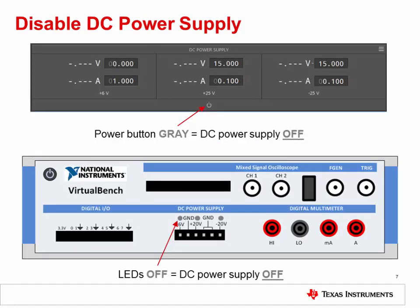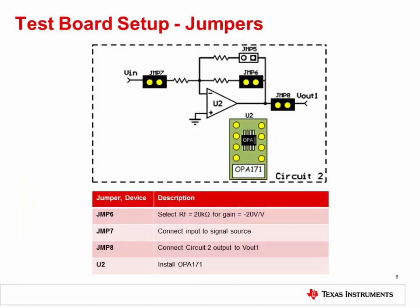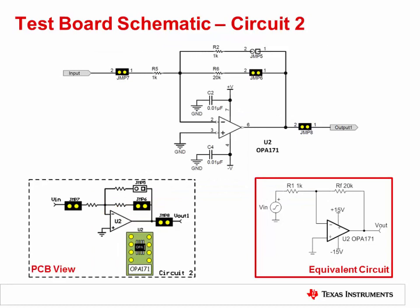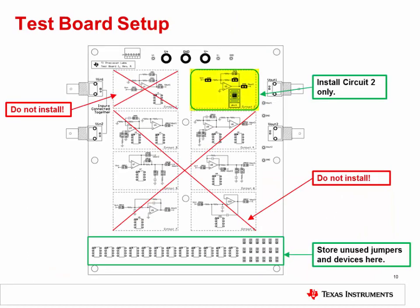Make sure to disable the DC power supply before setting up the test PCB. In the VirtualBench software, click the Power button in the DC power supply area to turn off the power. Check the front panel of the VirtualBench unit to make sure the LEDs are off. Also make sure that the function generator is off. To prepare the test board for the measurement, install the jumpers and devices on circuit 2 as shown here. Install JMP6, JMP7, and JMP8, as well as the OPA171 in socket U2. Do not install any jumpers or devices in any other circuits on the PCB. Remove any jumpers or devices from the unused circuits, and store them in the storage area at the bottom of the test board.